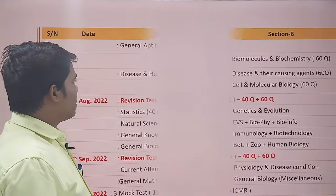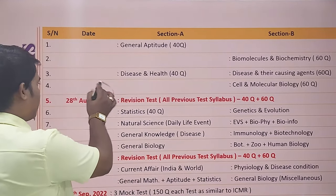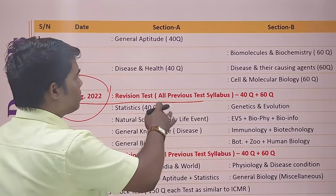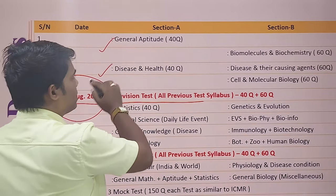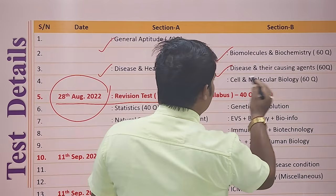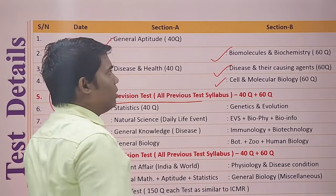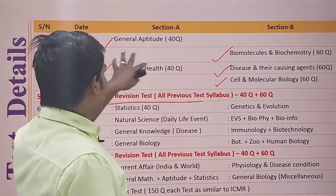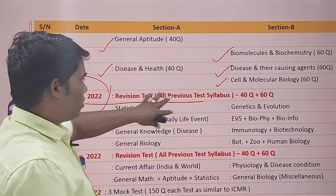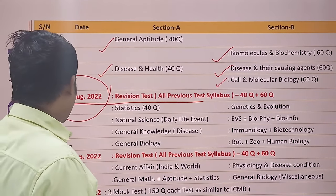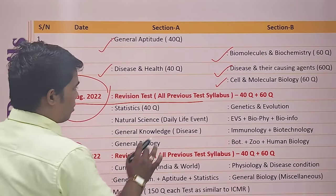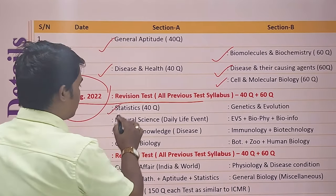The second exam will be on 28th August. The syllabus for this exam will cover: General Aptitude, Disease and Health, Biomolecule, Disease and their Causing Agents, Cell and Molecular Biology from Section B, and General Aptitude and Disease and Health from Section A.